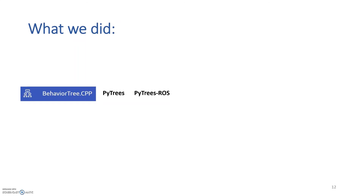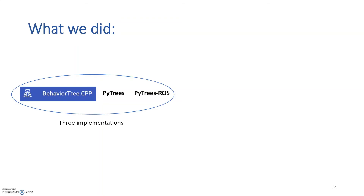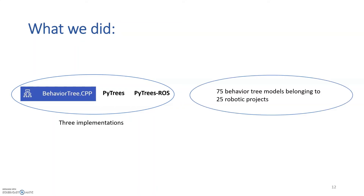To understand the key concepts offered by behavior tree languages, we thoroughly analyzed three behavior tree language implementations that are well-maintained and support robotic applications: BehaviorTreeCPP, a C++ library, and two Python libraries, py_trees and py_trees_ros.